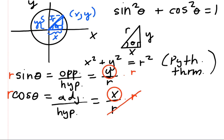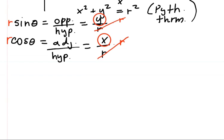And we're left with r sine theta equals y, and r cosine theta equals x. So let's rewrite that. r sine theta equals y, r cosine theta equals x.